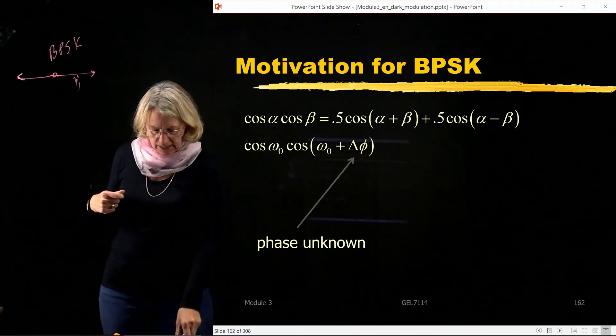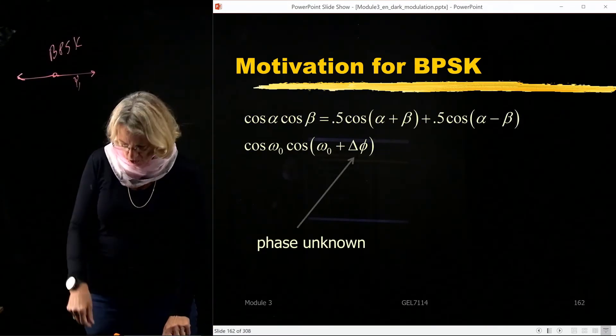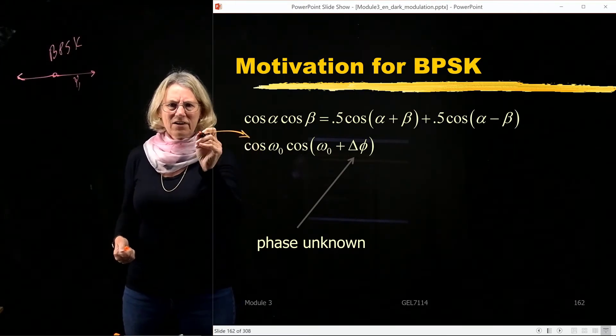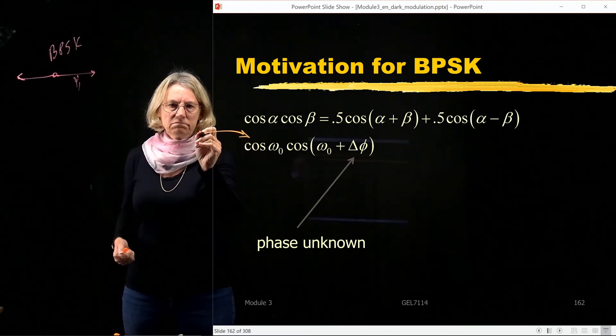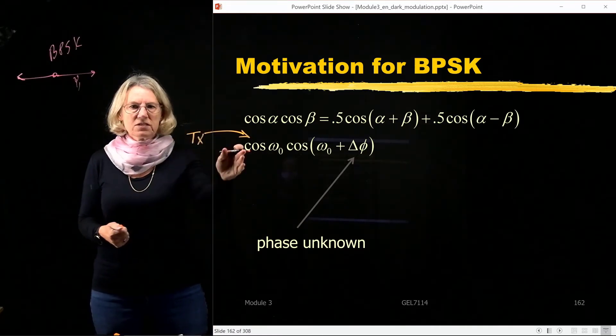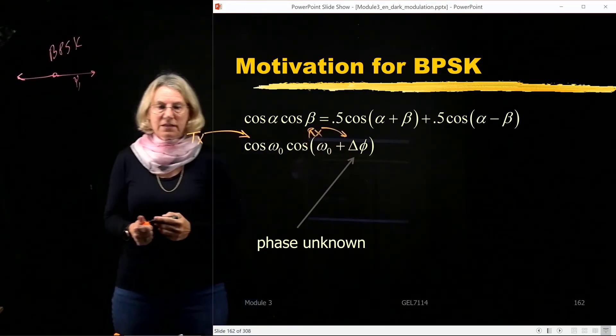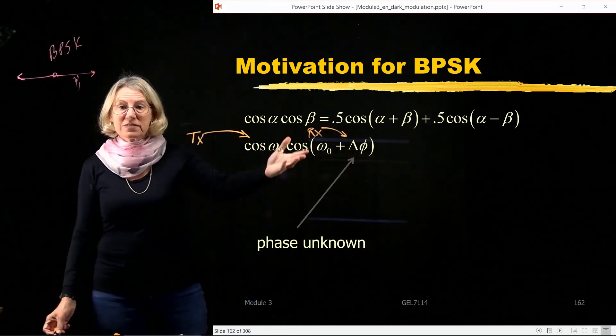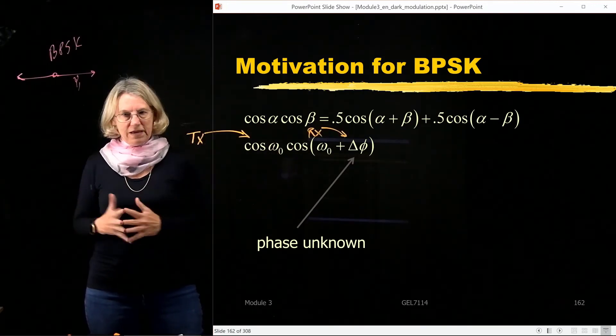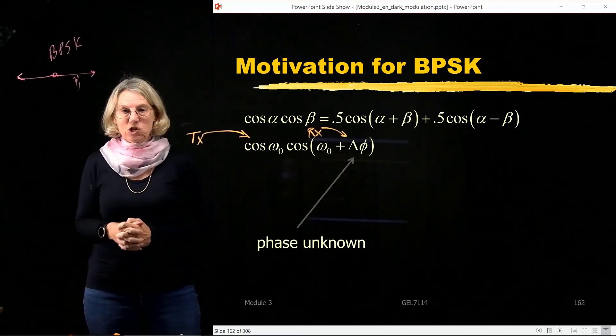So let's just think about what's going on here. So I can think about the first cosine term here. This could be like the oscillator at the transmitter. And now at the receiver, there is something that's nominally at the same frequency, but it's got some phase that's unknown to me. I don't know what it is. I'm not going to pay in order to be able to find out what that is with the circuit. So I have to deal with this unknown phase.